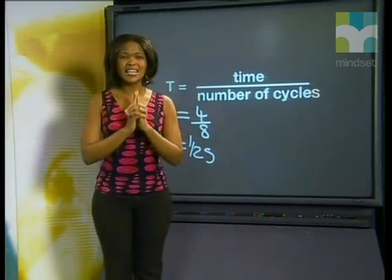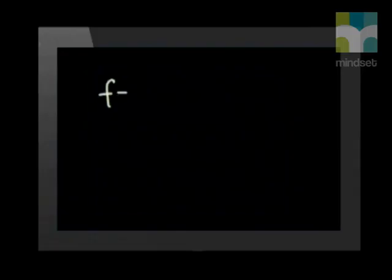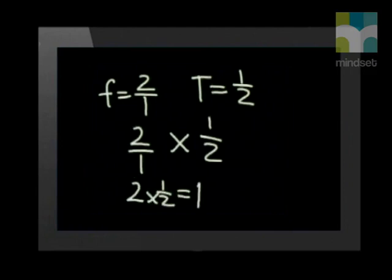Now I want you to take another look, a very careful look at these two calculations. Do you notice any relationship between the period and the frequency of the wave? Notice the value of frequency is two over one, while period is one over two. If we multiply these together, we will always get a constant value, one. This type of relationship is called an inversely proportional relationship.